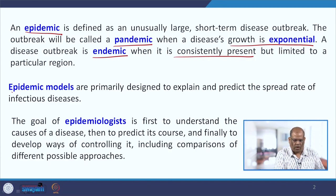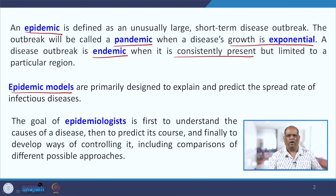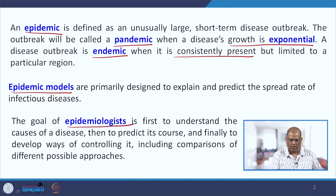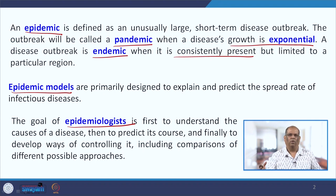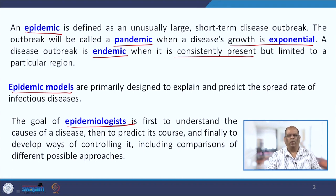Endemic models are primarily designed to explain and predict the spread of a disease and how you can control it. The goal of the epidemiologist is first to understand the cause of the disease, then to predict its course, and finally to find a way to contain or control it, including comparisons of different possible approaches.